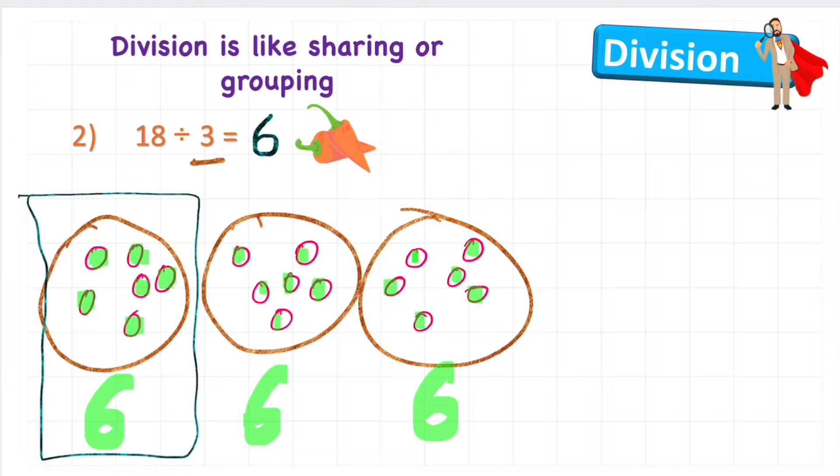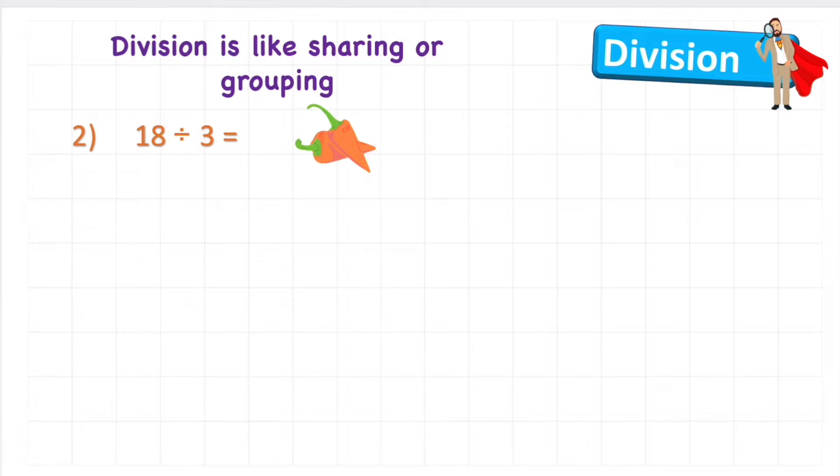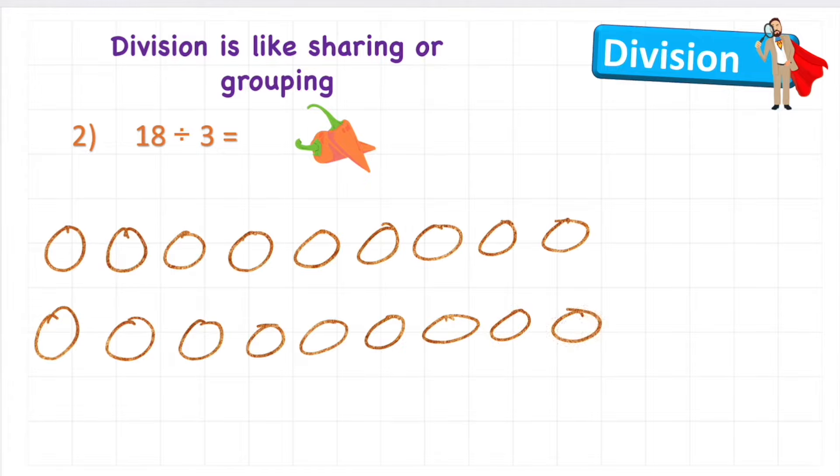So what do I now need to do? I need to count how many is in one. And we can see that we have six. So 18 divided by 3 equals 6. Okay, that's with our sharing method. Now let's have a little look at our grouping method. See if we get the same answer. So when we're grouping, I'm just going to draw my cookies. There we go. I've got 18 of them.